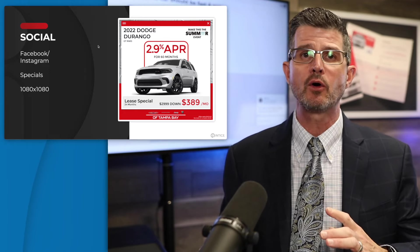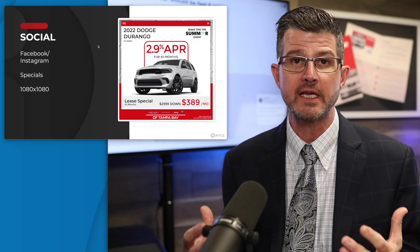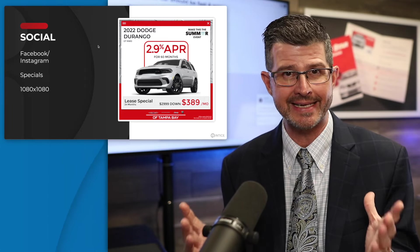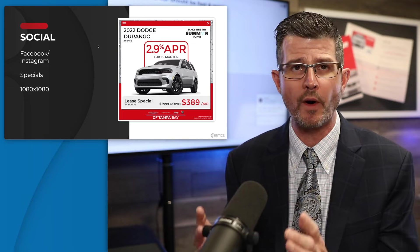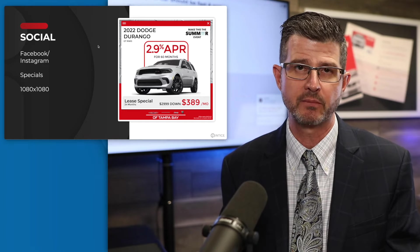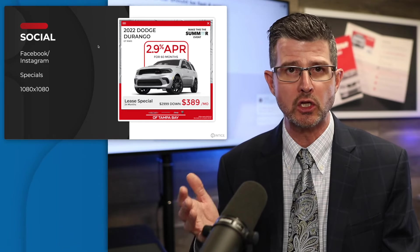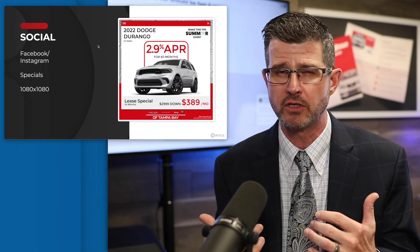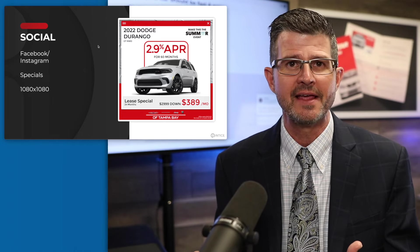What we do is build out all of these different ads for each of your individual models. What we're looking at right here is a square ad, a 1080 by 1080. This is one of our monthly ad specials. We're including a low APR offer and a lease offer — two of my favorite ways to advertise to consumers, whether it's a lease or a loan. Regardless of whether your dealership has a high lease penetration, that doesn't mean you shouldn't be advertising leases.